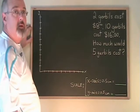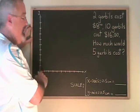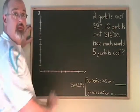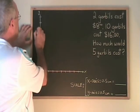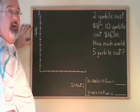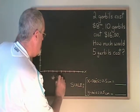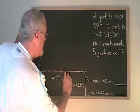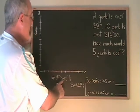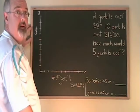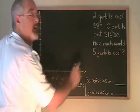The first thing I have to do, though, is scale my axes. We have numbers that don't necessarily fit if we scale 1, 2, 3, 4, 5 on an axis. Our question says, 2 gerbils cost $8, 10 gerbils cost $16. How much would 5 gerbils cost?